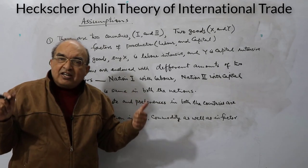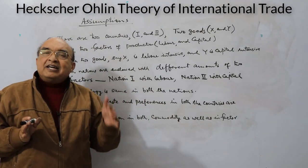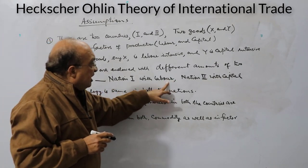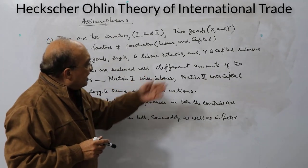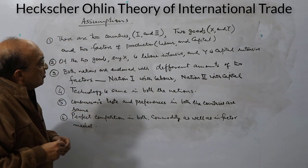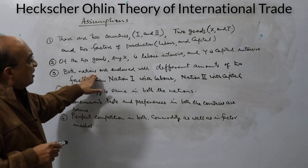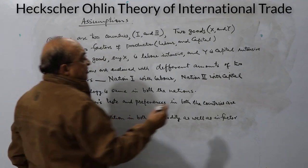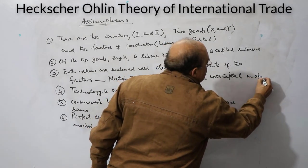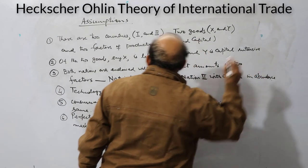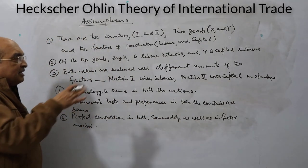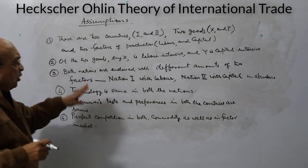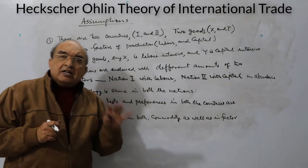Nation One and Nation Two have different endowments: Nation One is abundant in labor, and Nation Two is abundant in capital. Technology is the same in both countries. This is important because in the Ricardian theory technology differs between countries, defining labor productivity and forming the basis for trade. Here, the same technology is used in both countries.